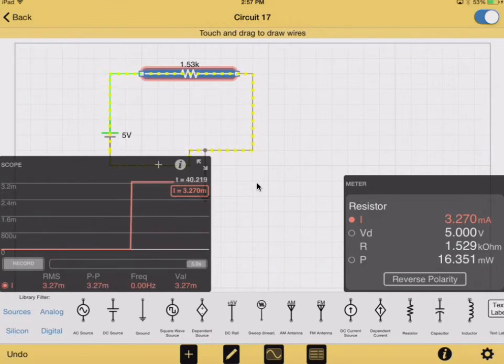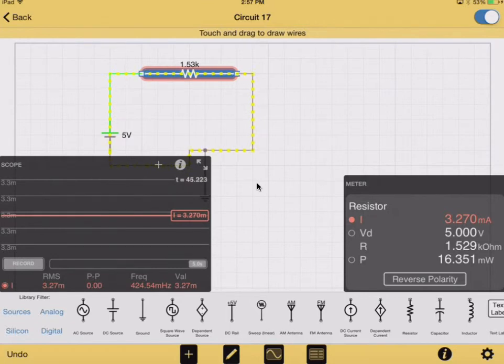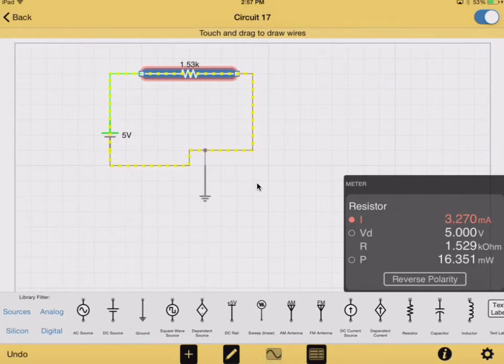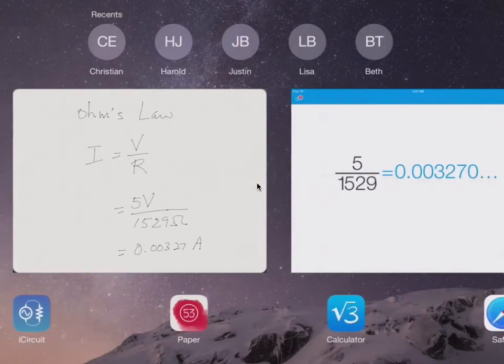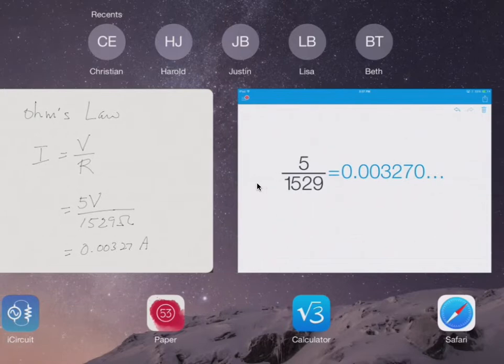So the current is actually 3.27 milliamps. And that's the same thing as our calculation right here, 3.27 milliamps.